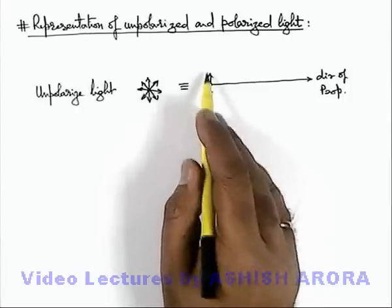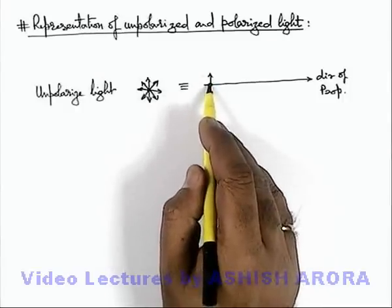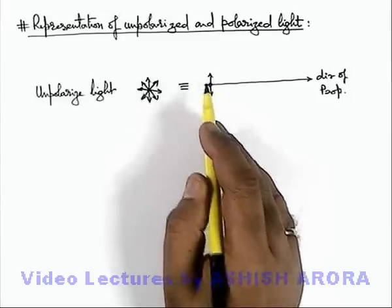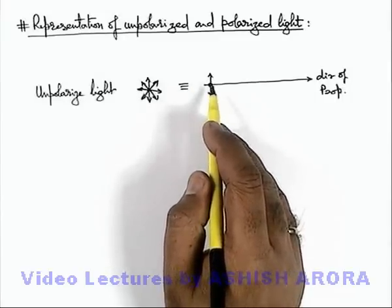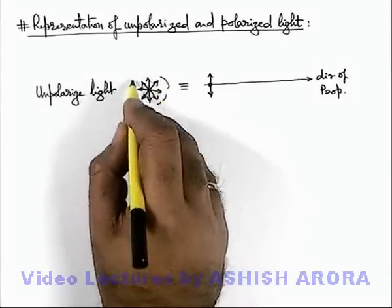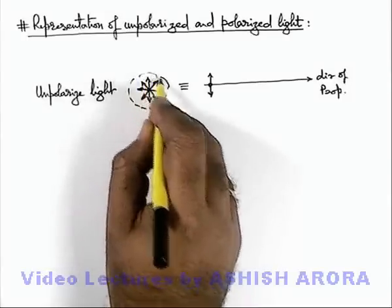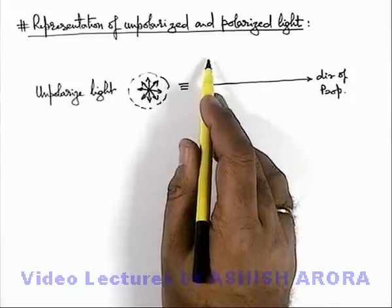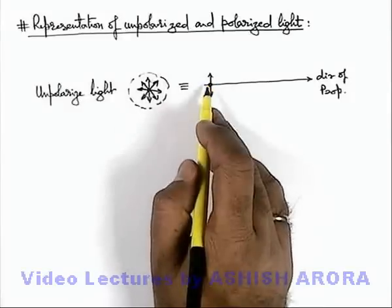Here this arrow represents the oscillations in the plane of paper and this dot represents the oscillations of field vector perpendicular to plane of paper. And here all these oscillations directions are resolved into two components: one is along the plane of paper, other is perpendicular to plane of paper.